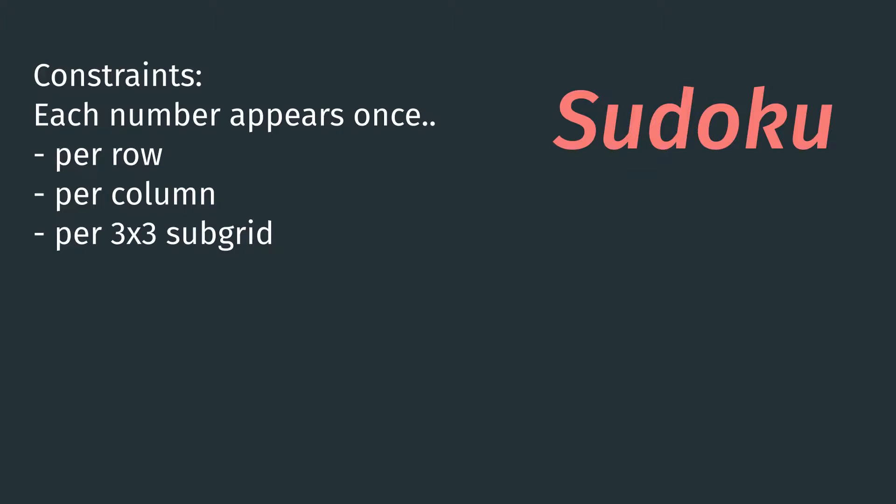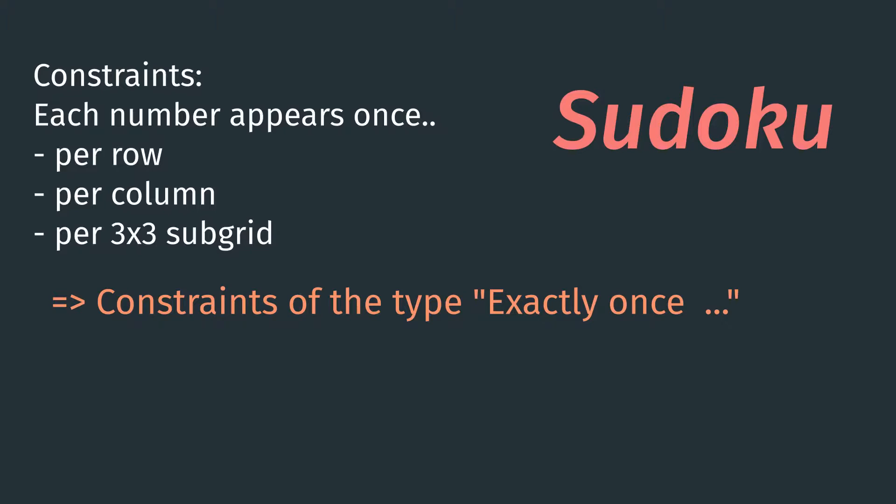In the Sudoku grid we have to make sure that each number appears only once per row, only once per column, and also only once per 3x3 subgrid. All these constraints are of the same type: a number appears only once per some set of cells. We're going to write a function that, given a list of literals, returns a clause that ensures only one of these literals is true.